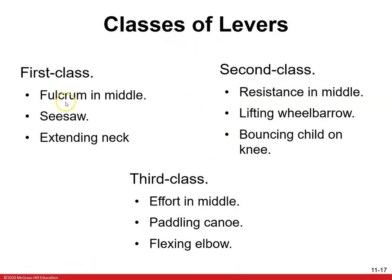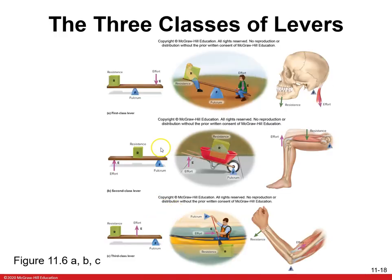Here are examples: a first class lever is a seesaw. A second class lever is a wheelbarrow — also bouncing a child on your knee, which is very easy even though they weigh 20 or 30 pounds. A third class lever is paddling — and that's also the biceps. Of all these, the most efficient is the wheelbarrow; the gastrocnemius is another second class lever example. First and third class levers are not very efficient. That's why your neck can fatigue quickly and why you have to work hard at the gym to really tax your biceps.